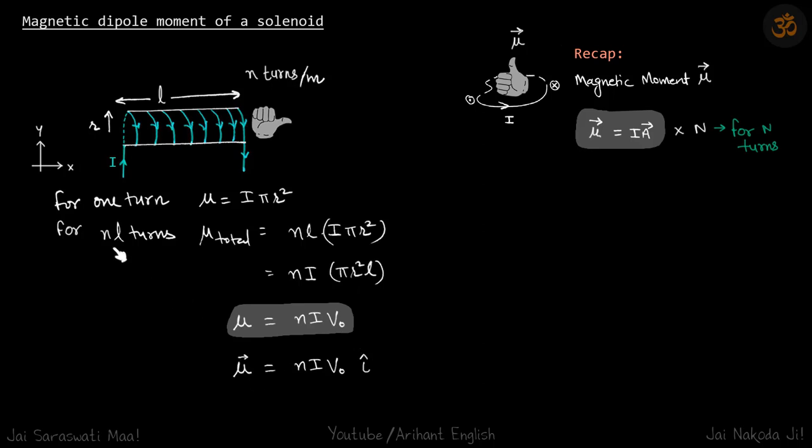Considering the direction, in this case it's towards the right. So μ = nIV₀·î. This is how we find the magnetic dipole moment of a solenoid.